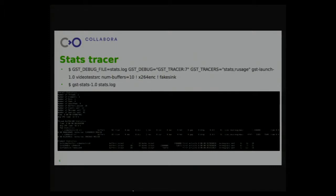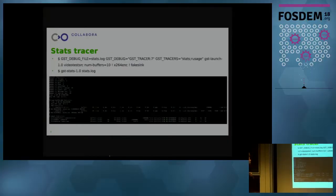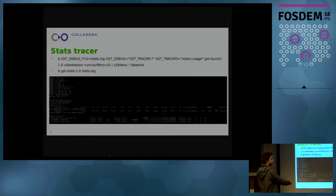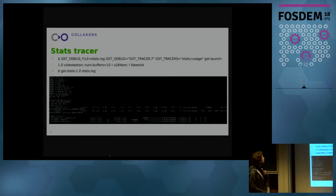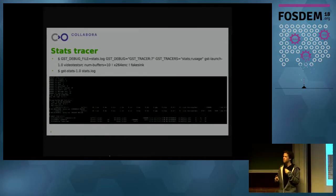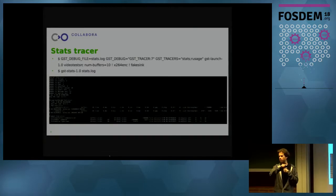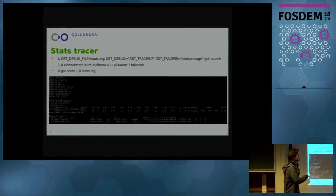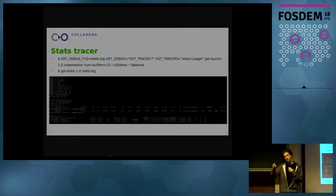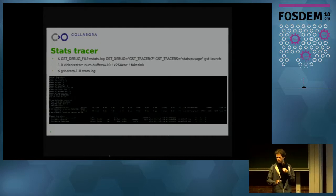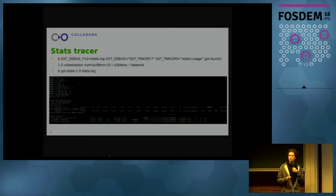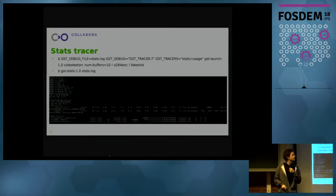You run that, it will generate a lot of logs to this file. Then there is the GST stats tool, which is part of GStreamer core as well, which will parse those files and generate a bunch of statistics. It will give you the number of elements in the pipeline, the number of pads, the number of buffers exchanged across the pipeline, and the timing as well. So you can see at what time in your pipeline each element received its first buffer, which can be useful if you have a very high startup time and want to see which element took more time to start.